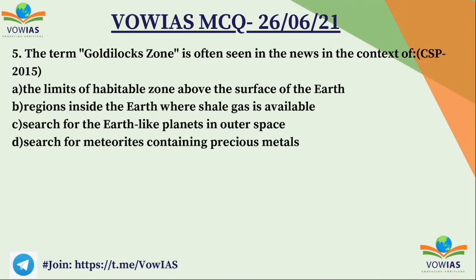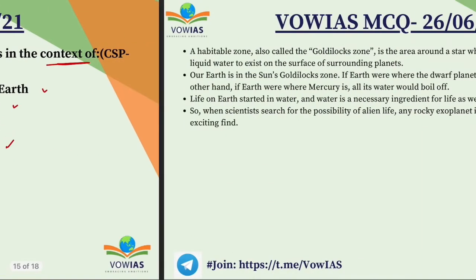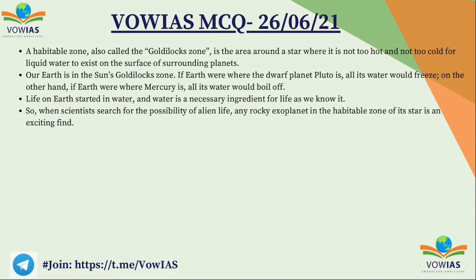The fifth question is a UPSC Civil Services previous year question from 2015: the term 'Goldilocks zone,' often seen in the news, is in the context of — A. the habitable zone above Earth's surface, B. regions inside the earth where shale gas is available, C. search for Earth-like planets in outer space, D. search for meteorites containing precious metals. The correct answer is C. The habitable zone surrounding a star is generally known as the Goldilocks zone.